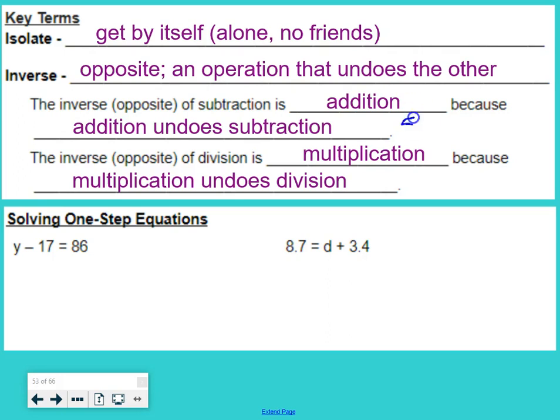So if we start with the number 5 and subtract 4, we get 1, but if we add 4, we get back to 5, right where we started. So it just undoes what the other operation just did.